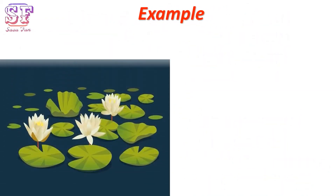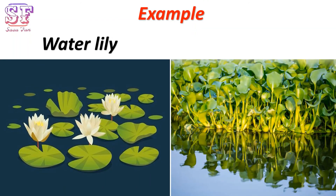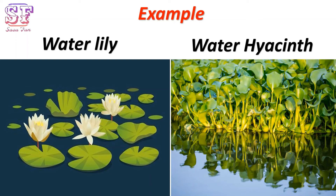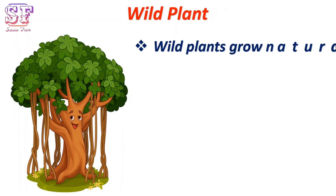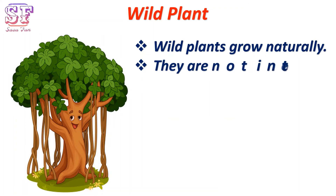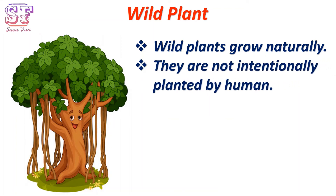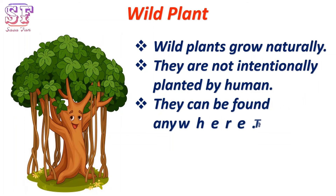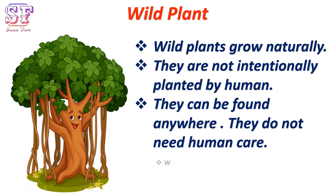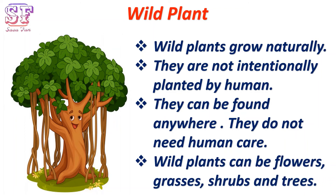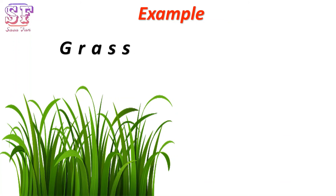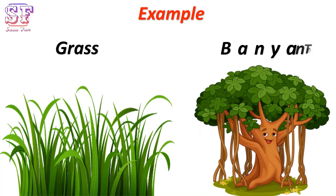Examples of water plants are water lily and water hyacinth. Wild plants grow naturally and are not intentionally planted by humans. They can be found anywhere and do not need human care. Wild plants can be flowers, grasses, shrubs, and trees. Examples are grass and banyan tree.